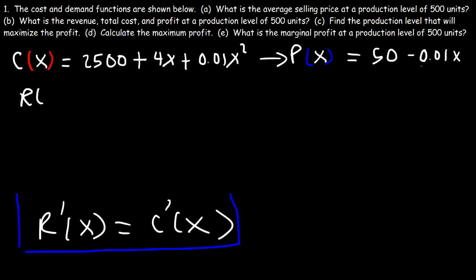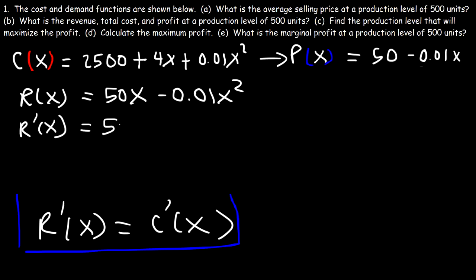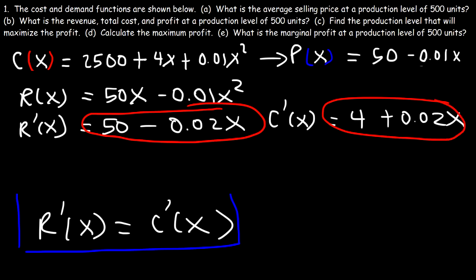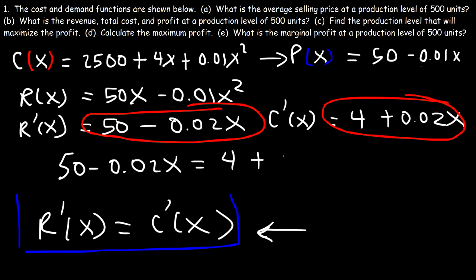The revenue function is 50x minus 0.01x squared. The marginal revenue (derivative) is 50 minus 0.02x. For marginal cost, the derivative of 2500 plus 4x plus 0.01x squared is 4 plus 0.02x. Now we set marginal revenue equal to marginal cost. Alternatively, you can set marginal profit equal to zero — both approaches give the same answer.